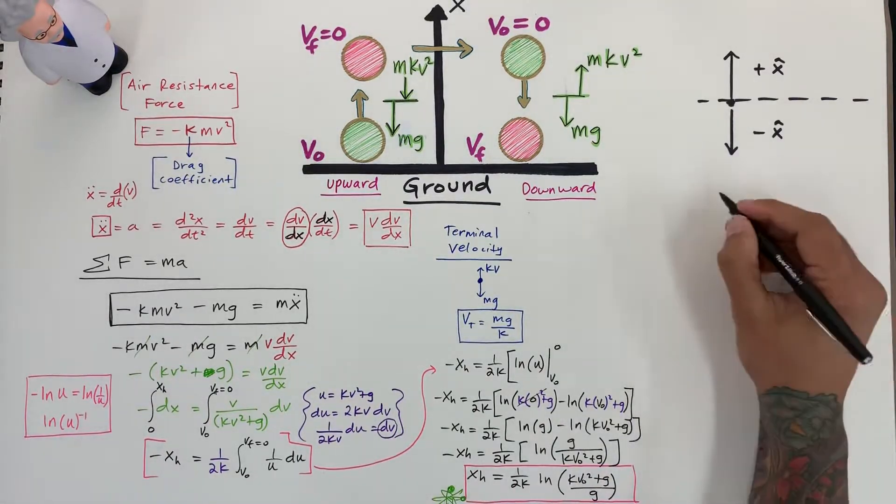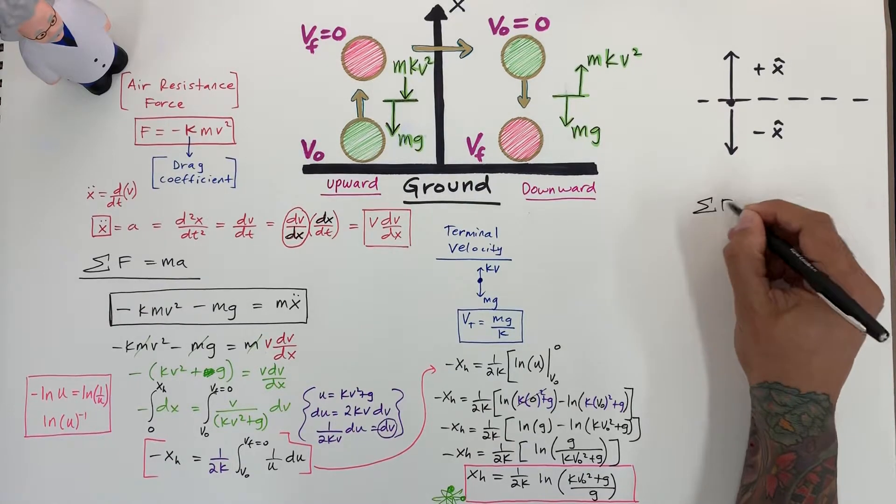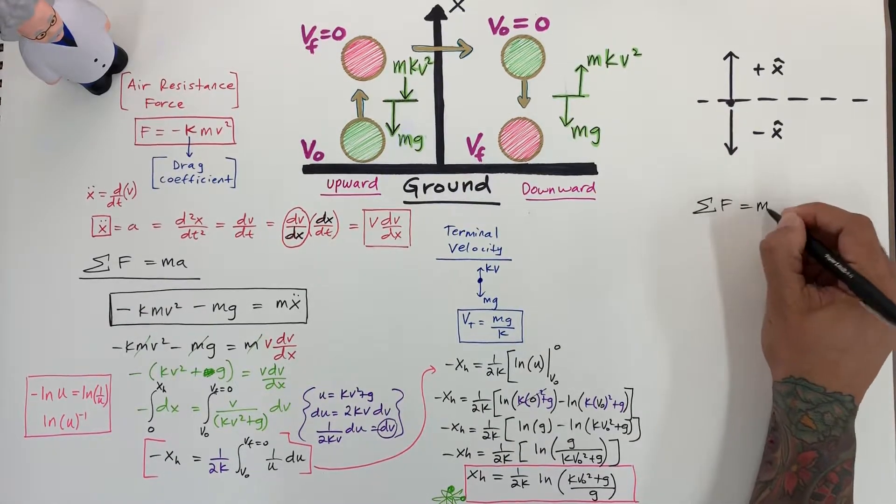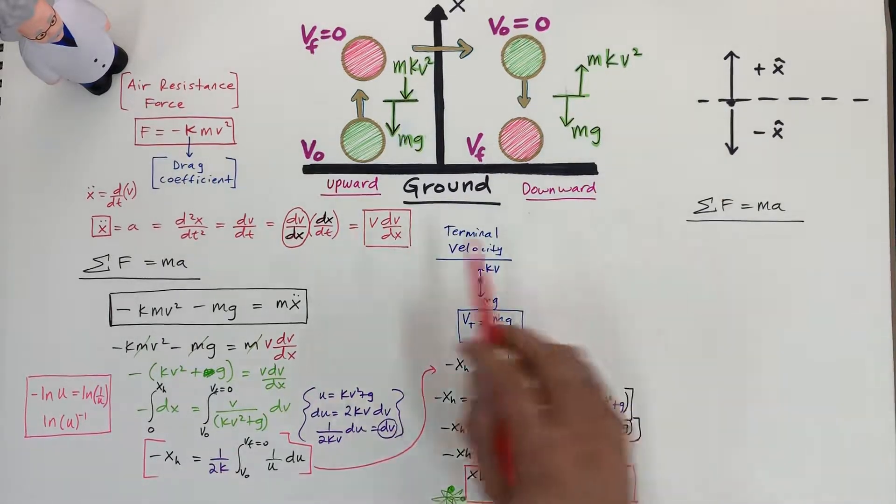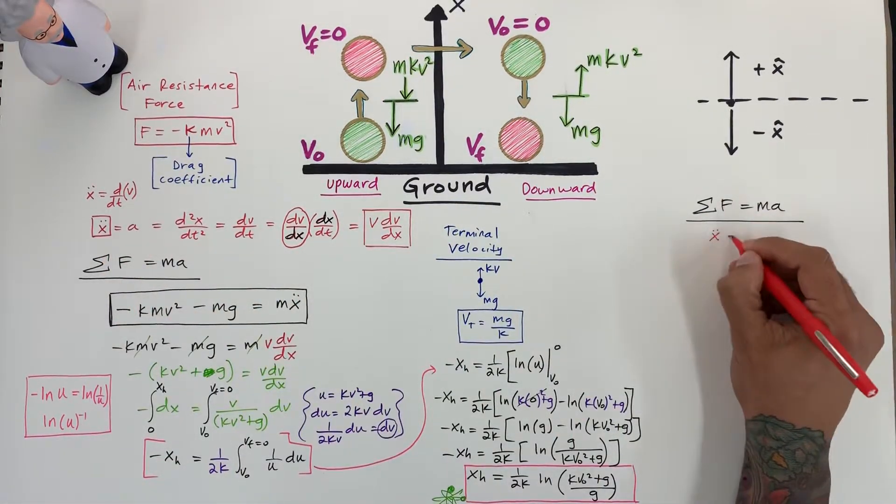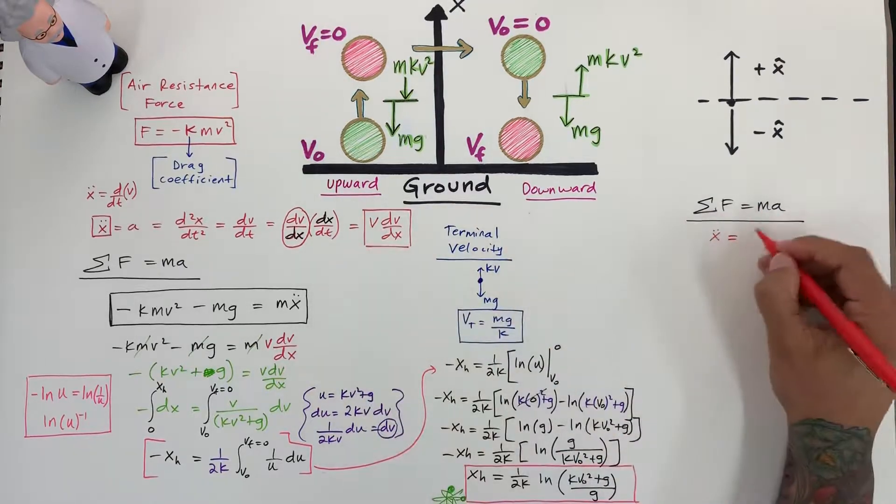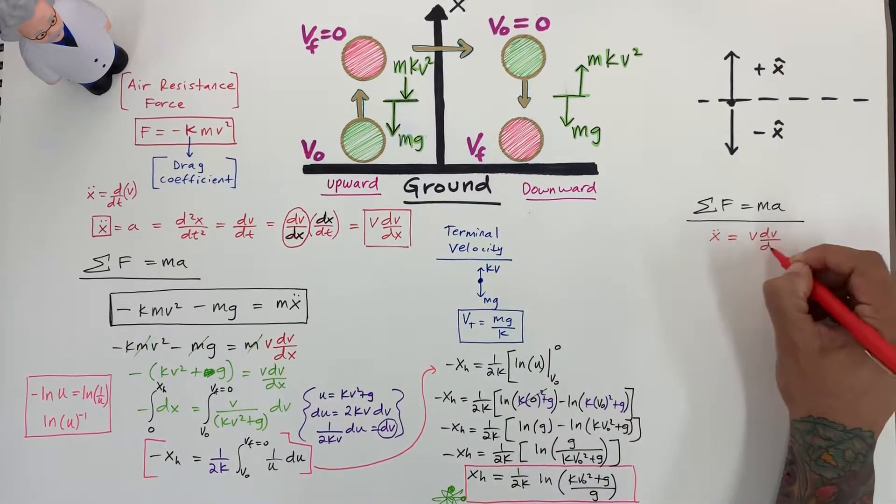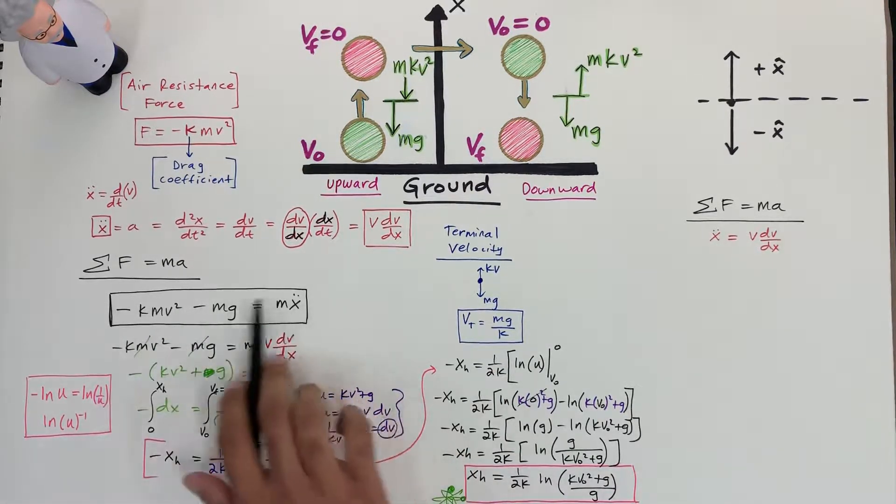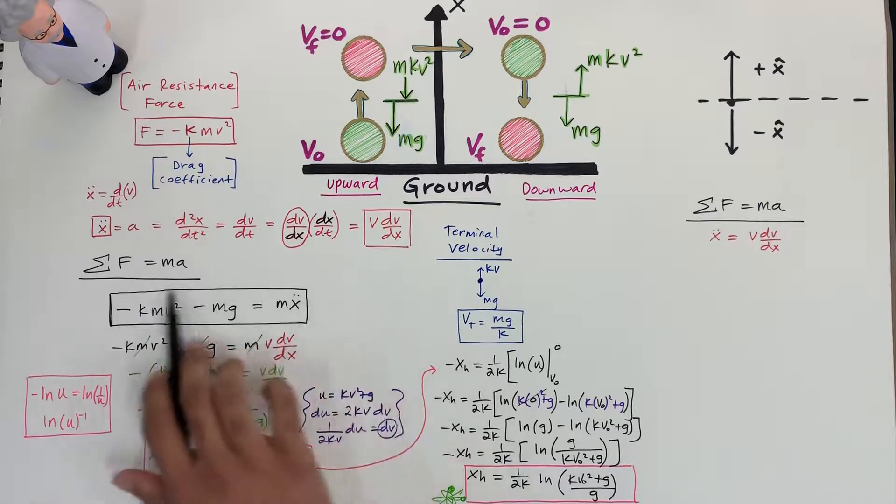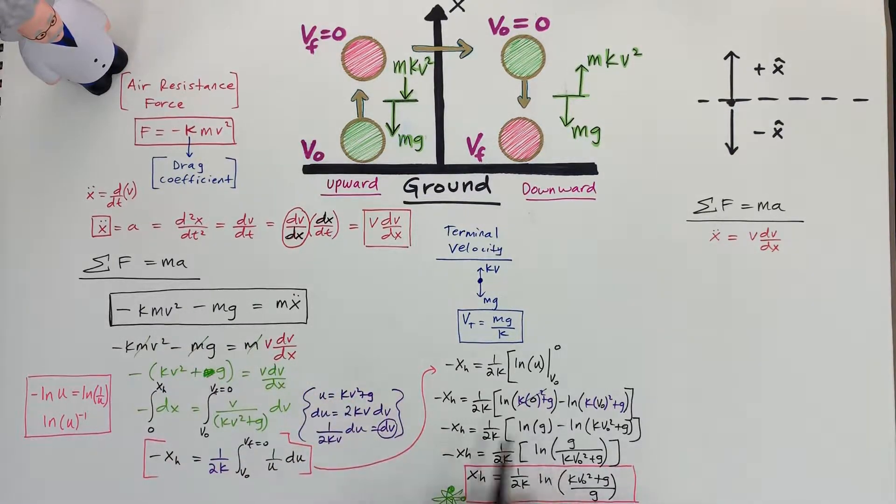So we start off with sum of forces equation. We know from the previous problem that x double dot is equal to v dv dx. Now we've got to set up our problem. We set it up here, and so this is the most important step right here, because if you get this wrong, then everything else would be wrong.